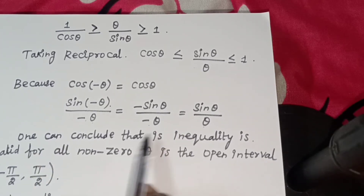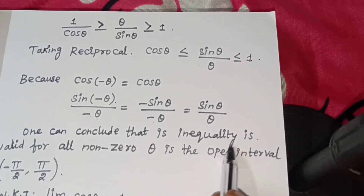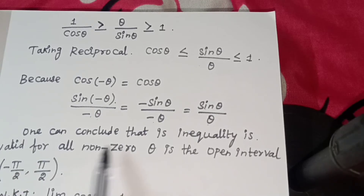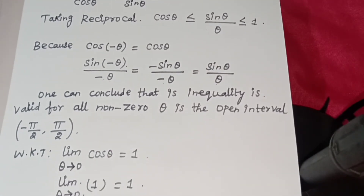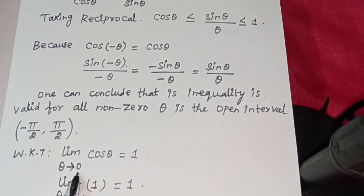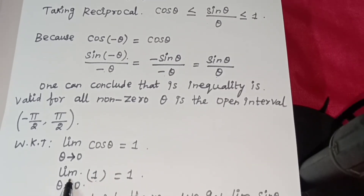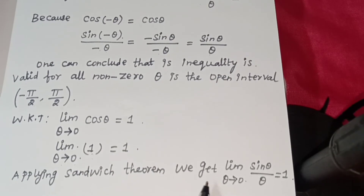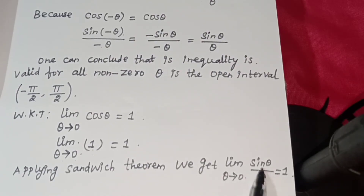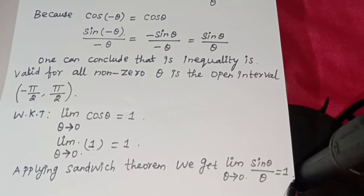This is the conclusion. One can conclude that this inequality is valid for all non-zero theta in the open interval (−π/2, π/2). We know that limit theta tends to 0 of cos theta equals 1, since cos 0 equals 1. By the Sandwich Theorem, we get limit theta tends to 0 of sin theta divided by theta equals 1. This is the first result, subdivision A.